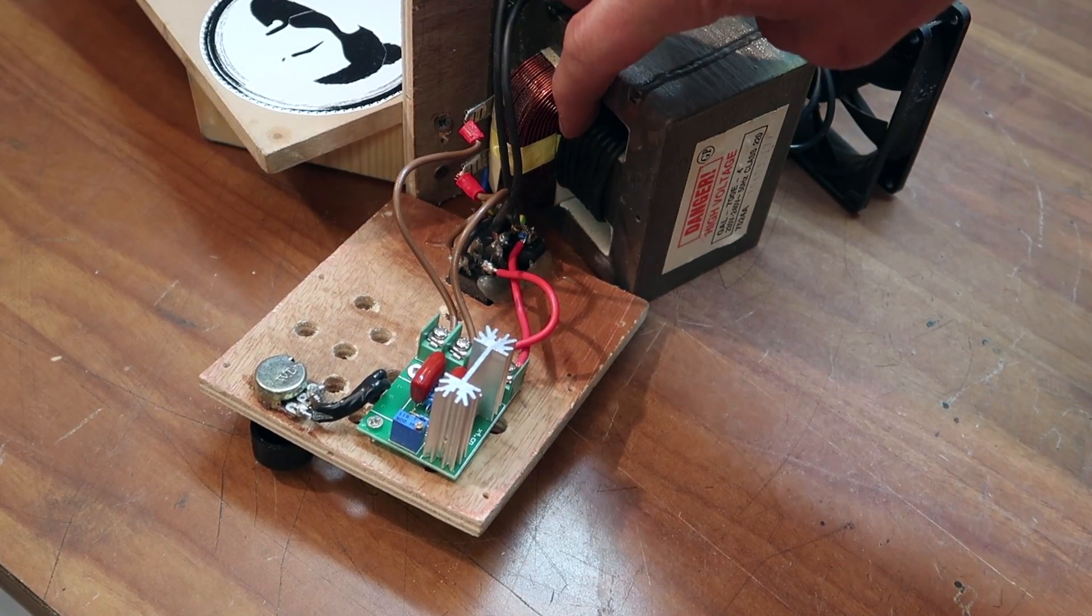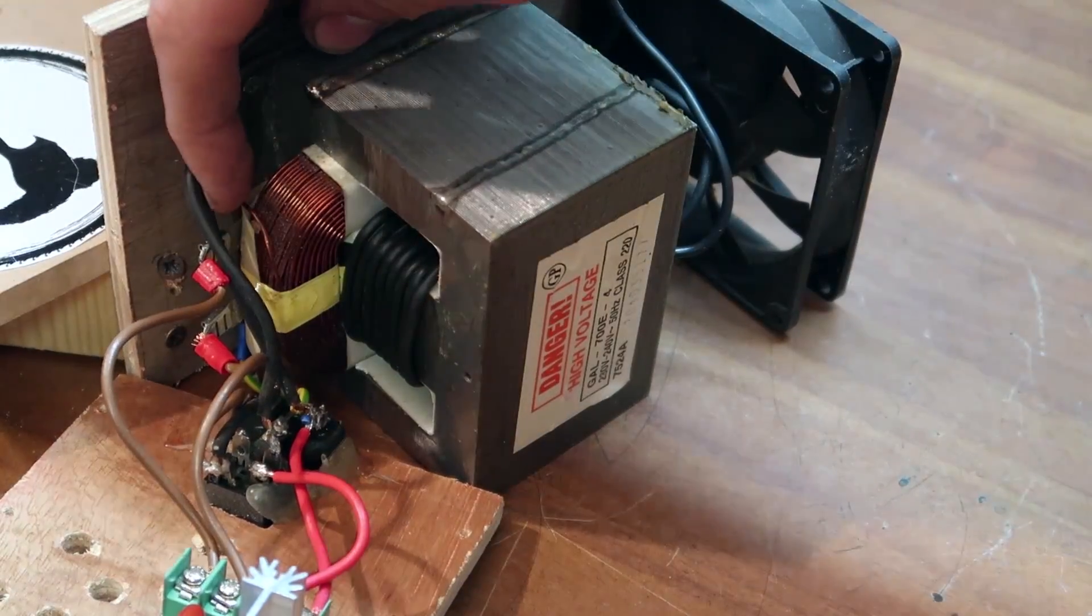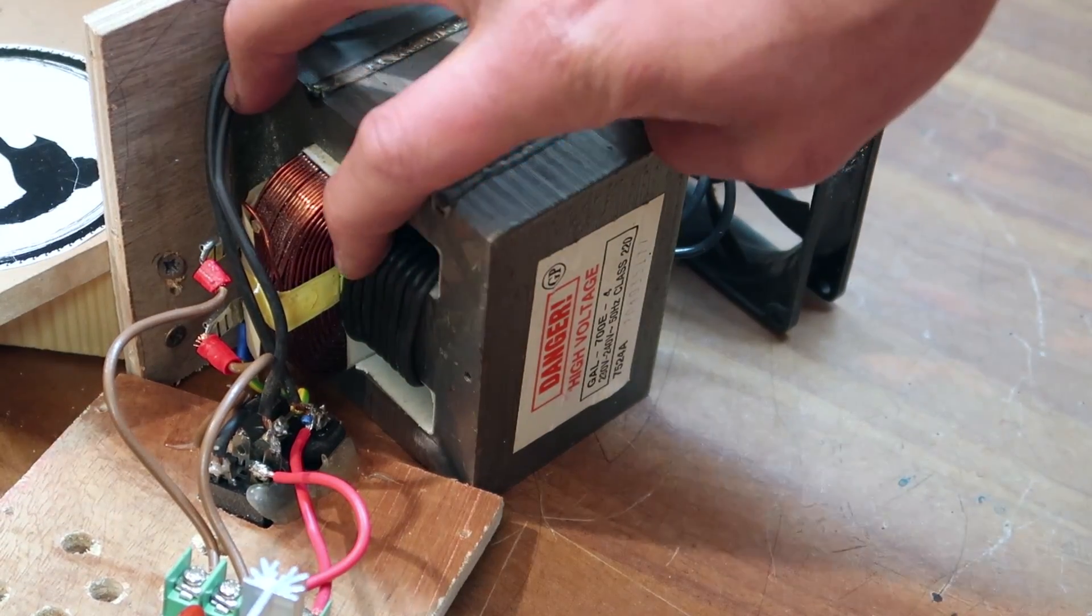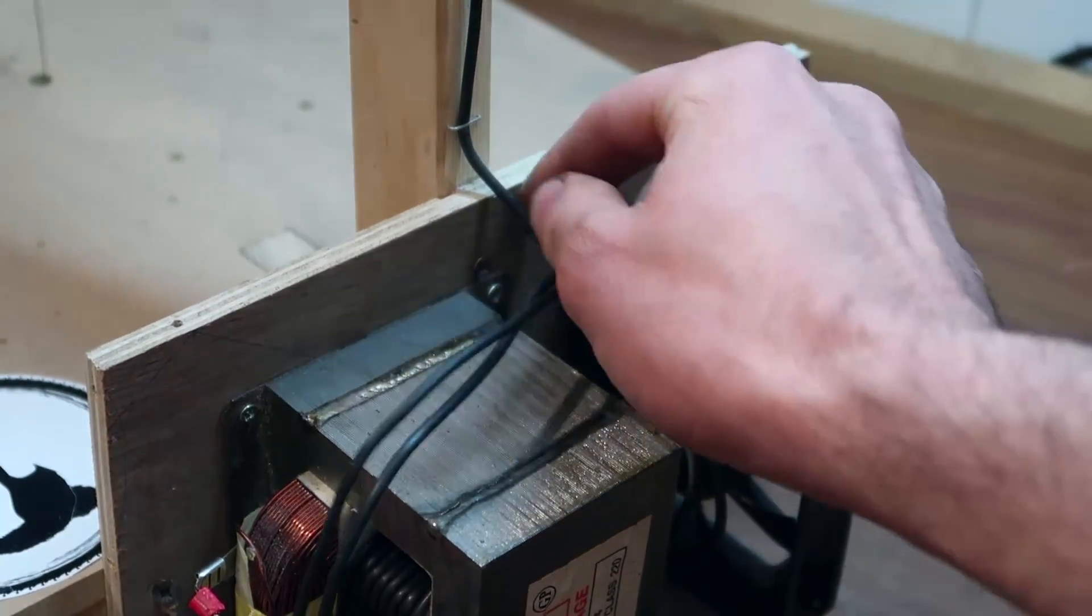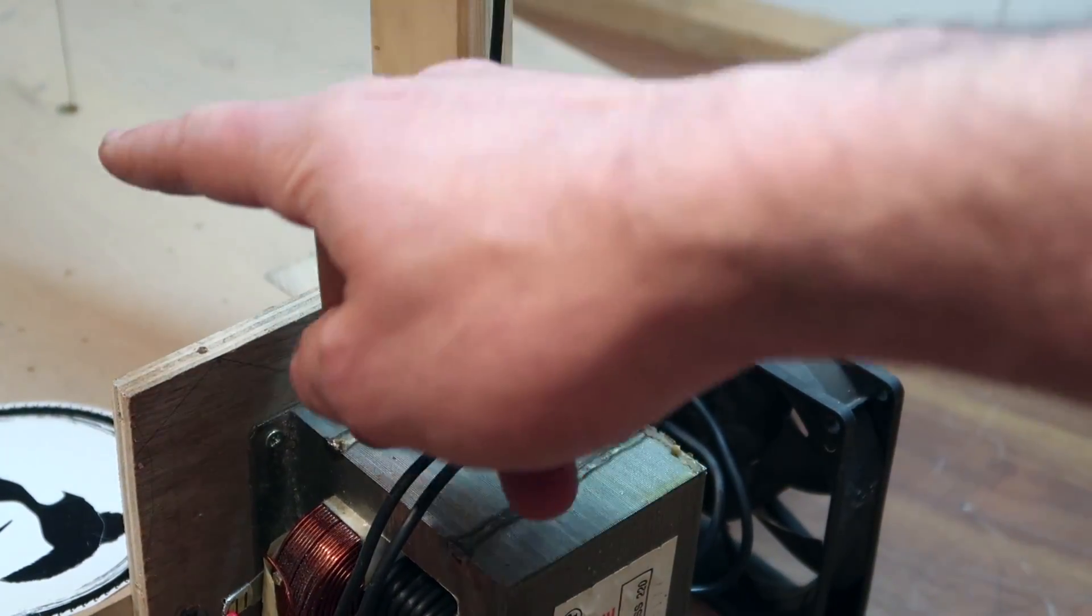The transformer comes from a microwave oven. As you can see I replaced the secondary winding. Now it's composed of 10 turns of 5 mm copper wire. The secondary winding then directly connects to the heating element.